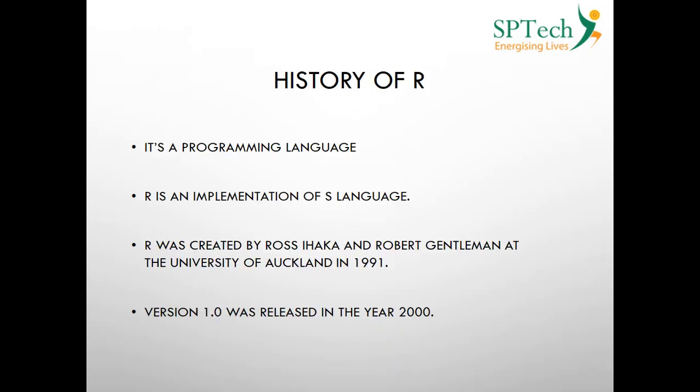Now coming to the history of R — what exactly is R? Before you actually learn any programming language, you need to know its history. R is a programming language that helps you to develop programs. There are so many programming languages we have studied in the past, like C, C++, and Java, and R is one such programming language.